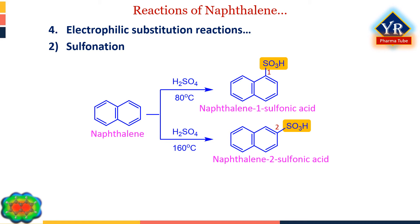The 2-substituted isomer is more stable, probably because there is less steric hindrance between the bulky sulfonic acid group and the adjacent ortho hydrogens H1 and H3, compared to between the 1-sulfonic acid and the peri hydrogen at position 8.